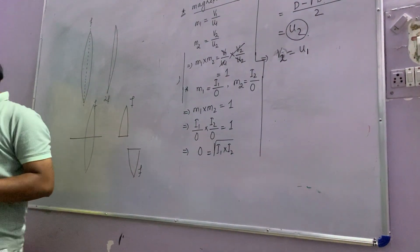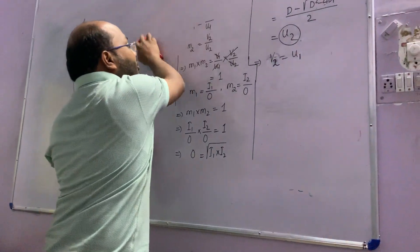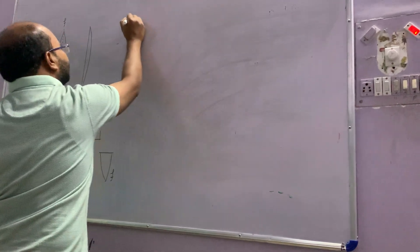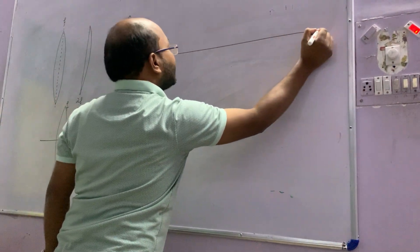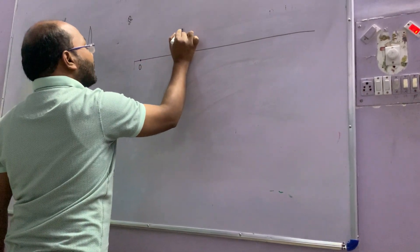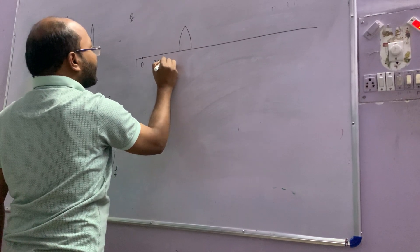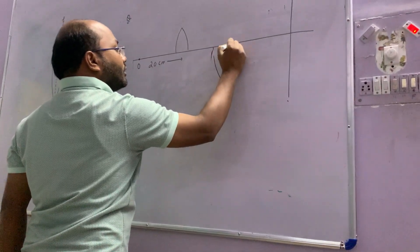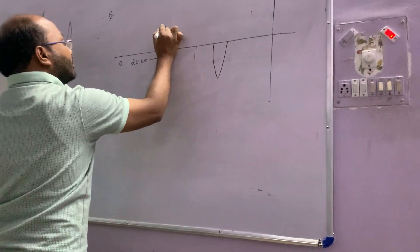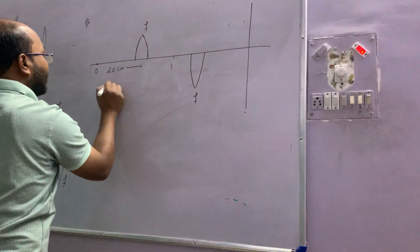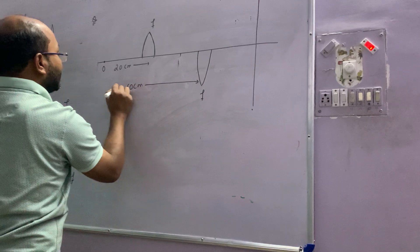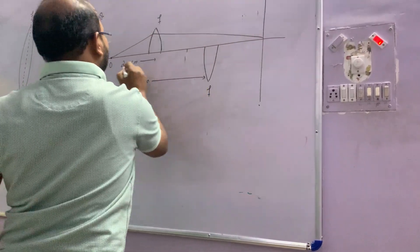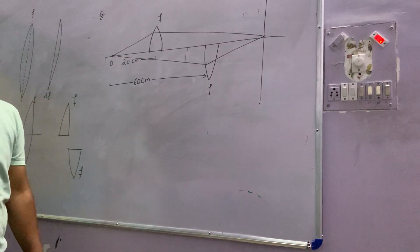Now let me put a question. Consider this setup: the object is here, this distance is 20 cm, the screen is here at 20 cm, and there is another lens of the same focal length at 60 cm from the first lens. It is given that both lenses form images at the same place. What is the focal length of the lens?